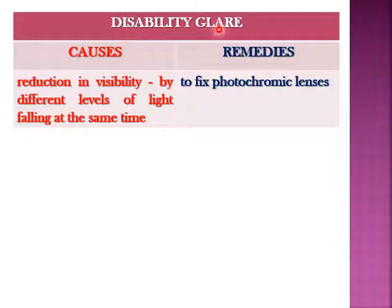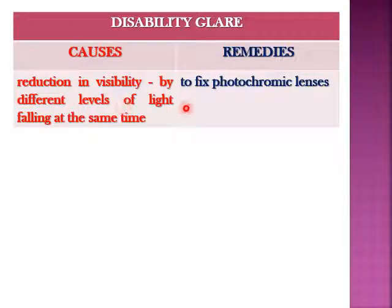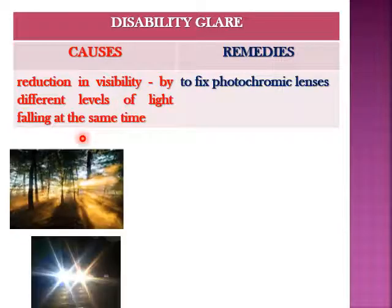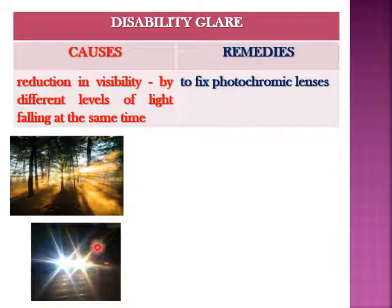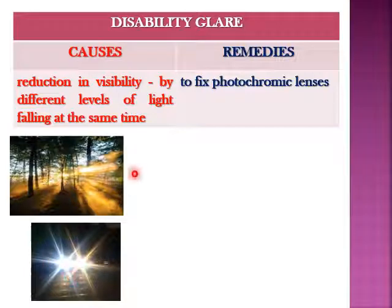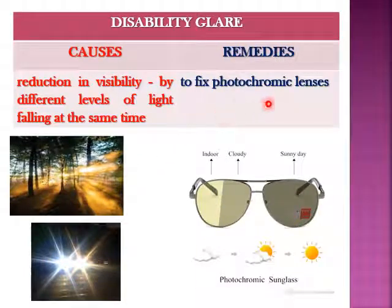Disability glare is a reduction in visibility due to different levels of light falling at the same time. The top picture shows multiple scattering of light from sunlight. The second picture shows multiple reflections from two different vehicles. To overcome such glare, photochromic lenses are used.